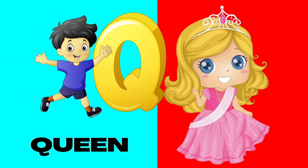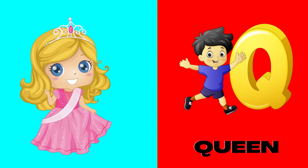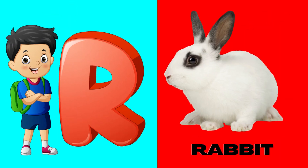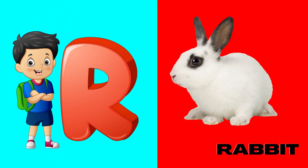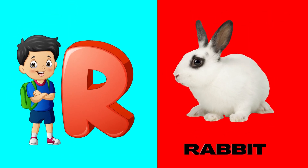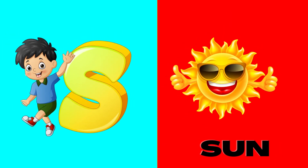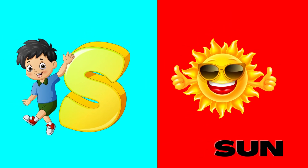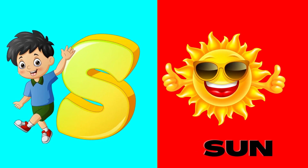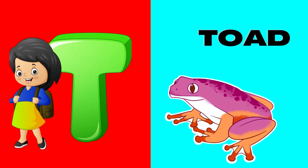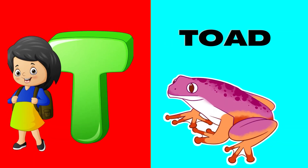Q is for queen, qu-qu-queen. R is for rabbit, r-r-rabbit. S is for sun, s-s-sun. T is for toad, t-t-toad.